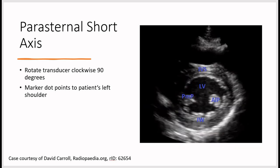For the parasternal short axis view, rotate the transducer 90 degrees clockwise from the parasternal long view, with the probe marker pointing to the patient's left shoulder and appearing on the right side of the screen. Structures visible include the interventricular septum, left ventricle, inferior wall, anterior lateral papillary muscle, and posterior medial papillary muscle. When you see the two papillary muscles — also known as the two punching bags — it's a good spot to assess LV function.